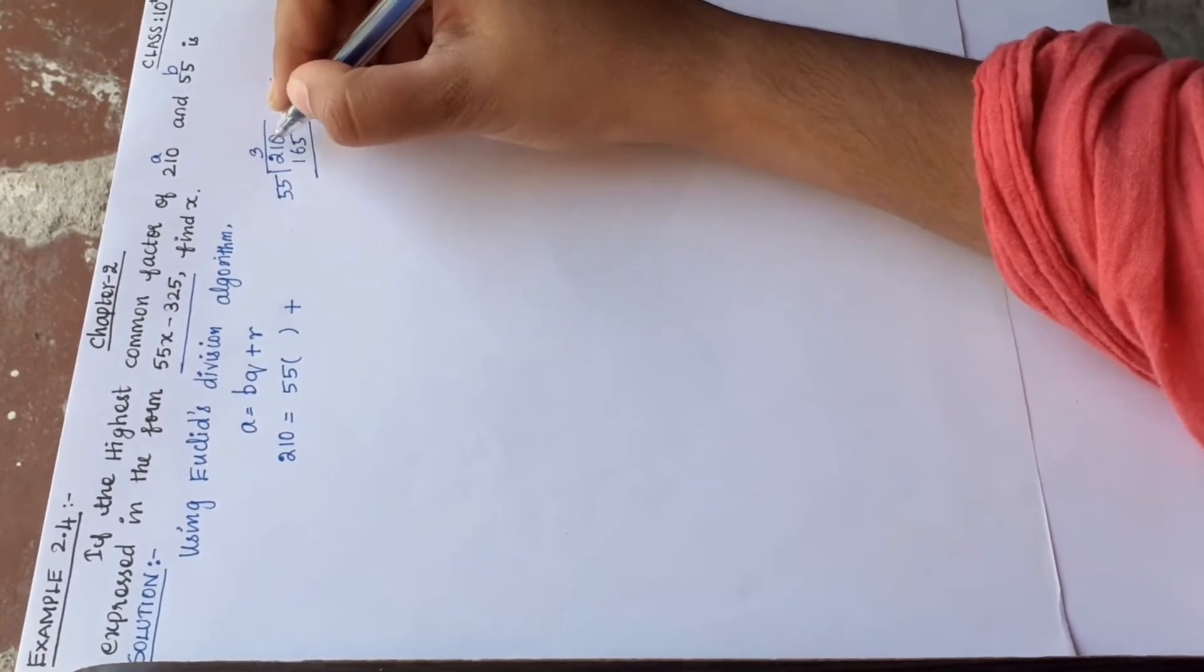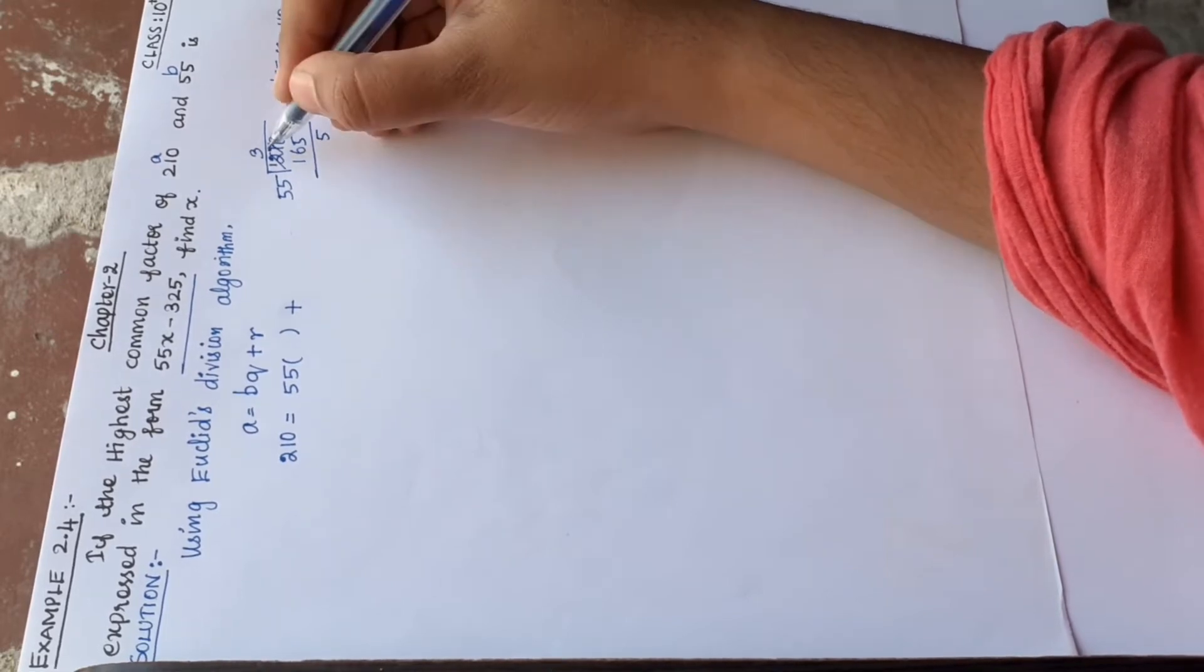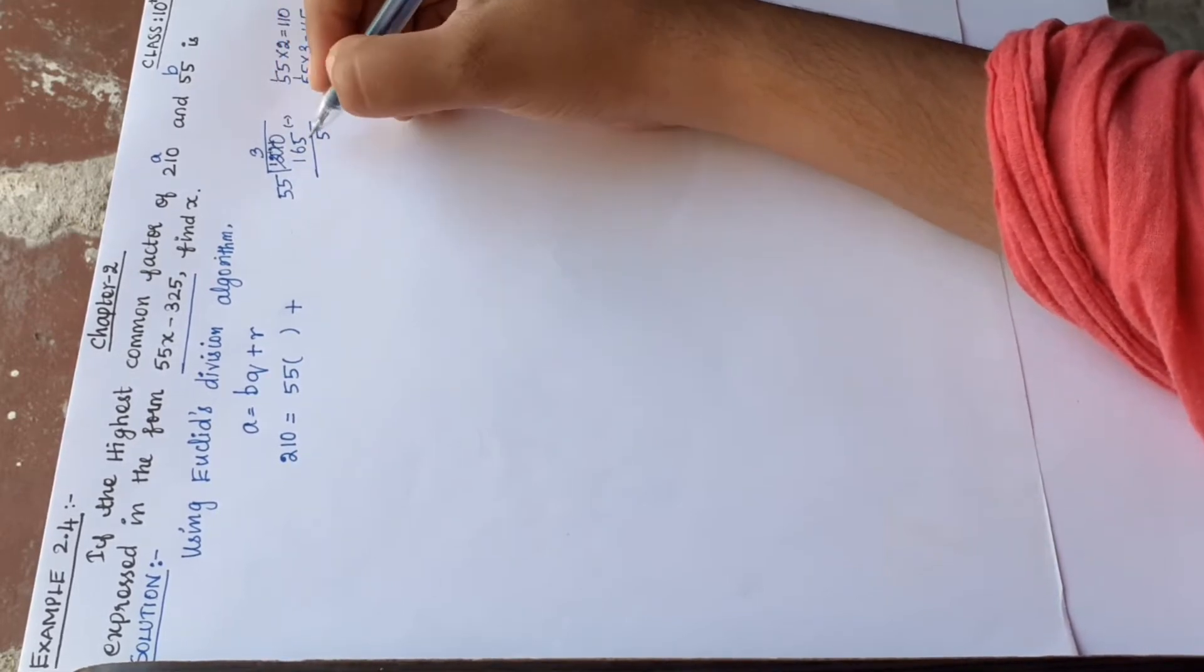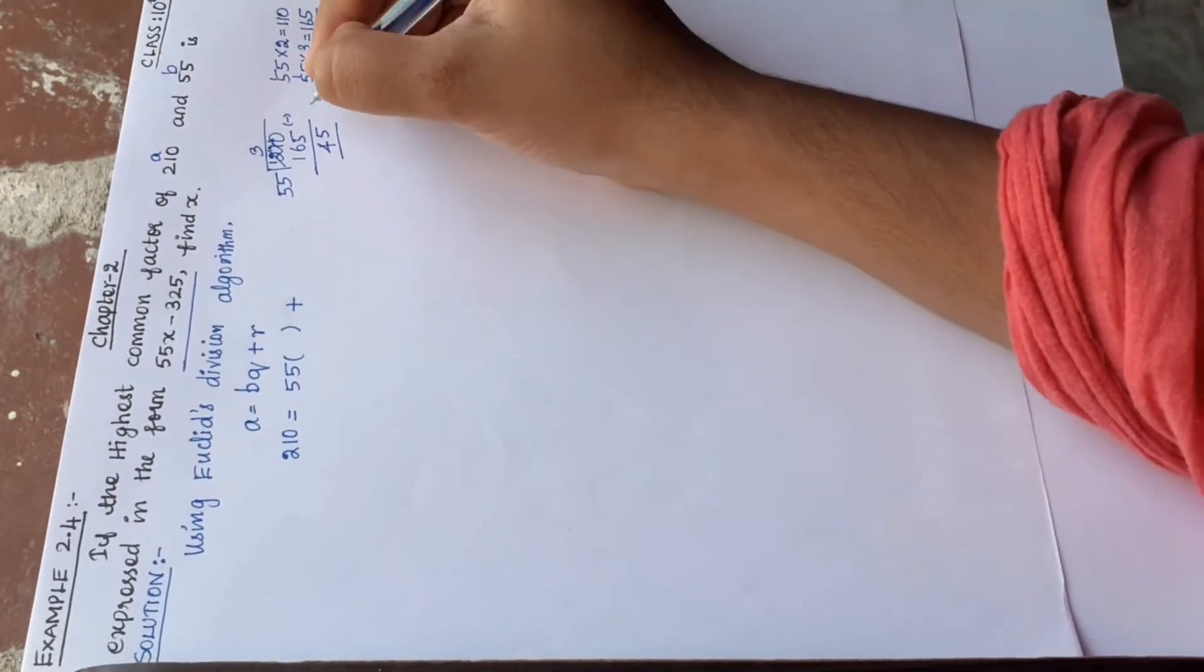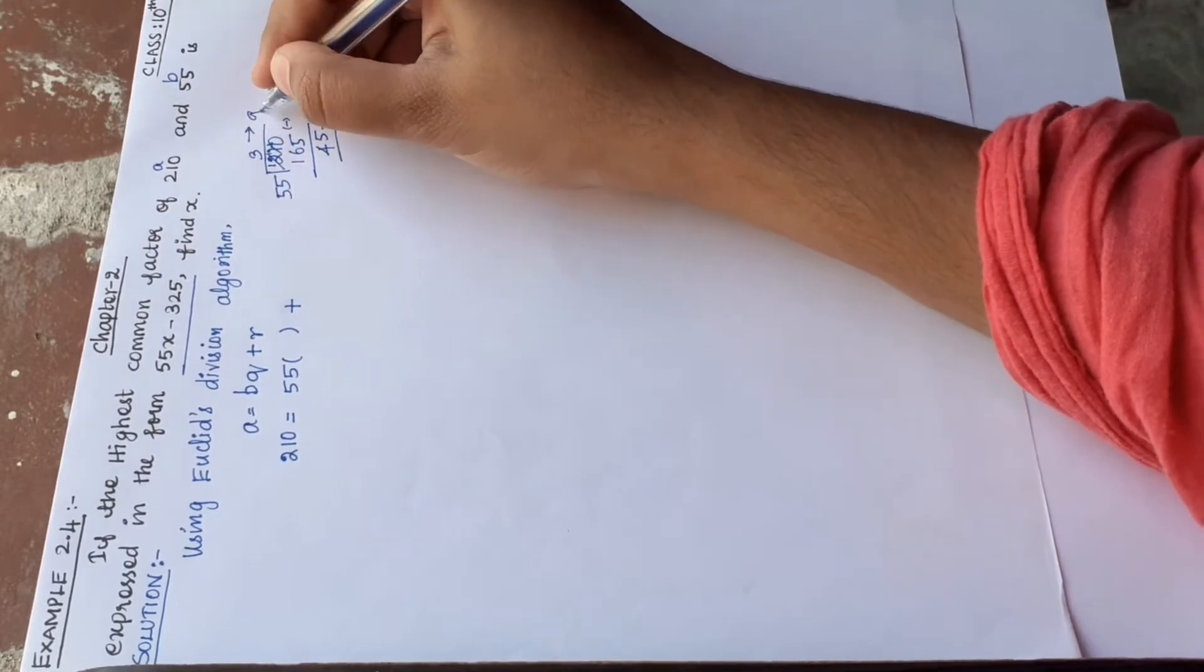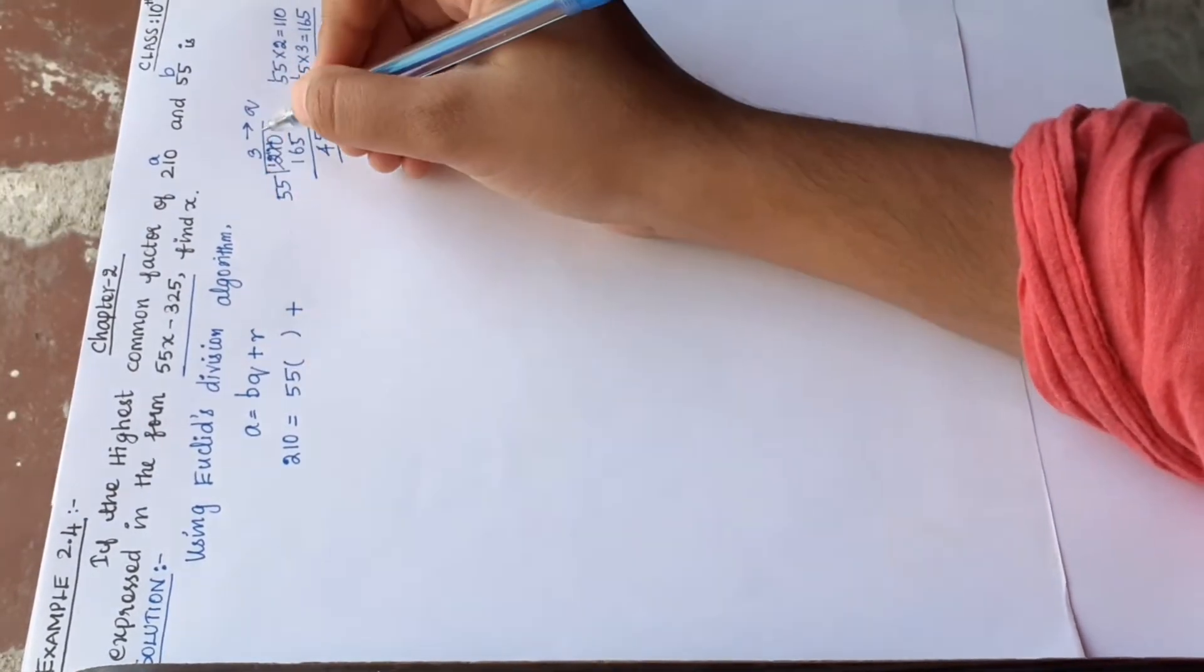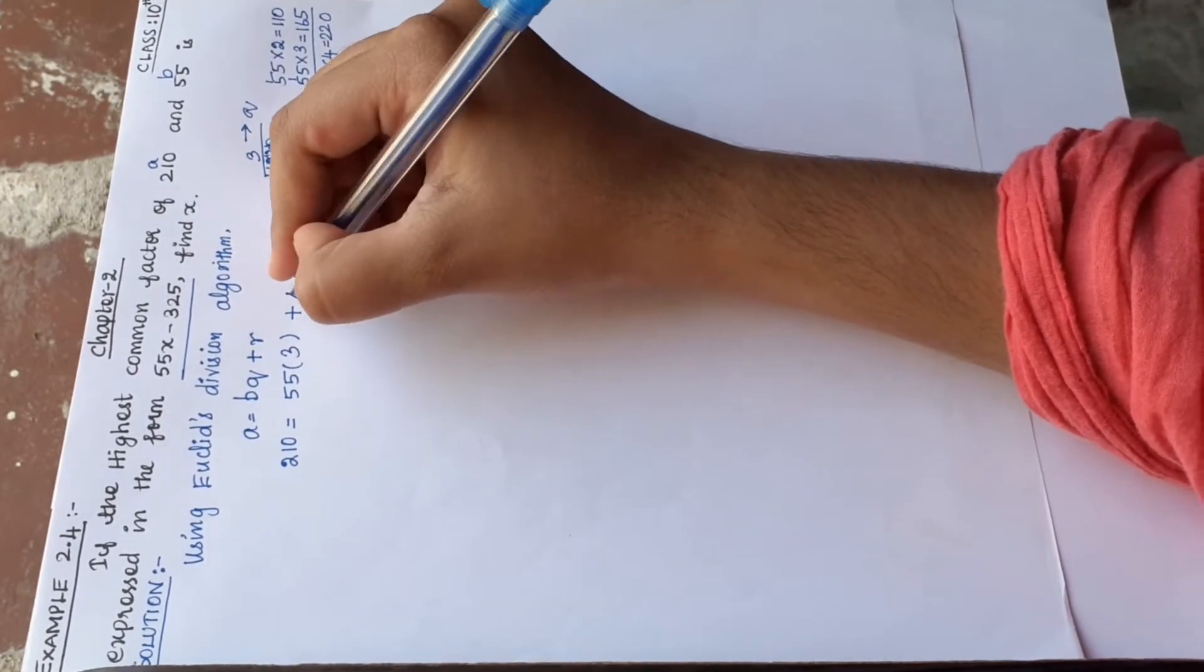So 210 minus 165 equals 45. The remainder is 45. So B into Q, the quotient is 3, plus the remainder 45.